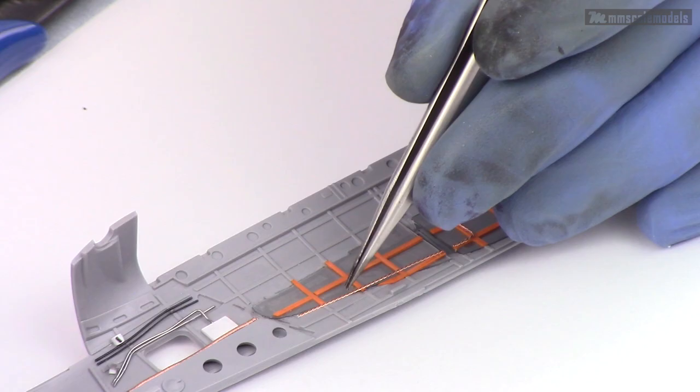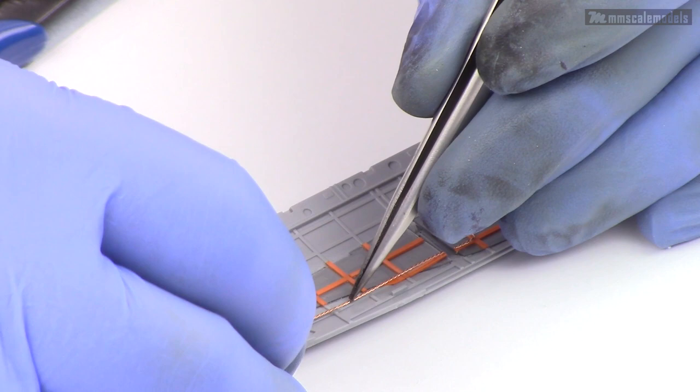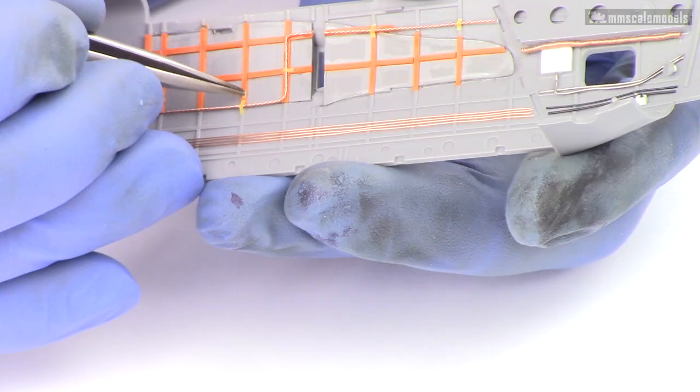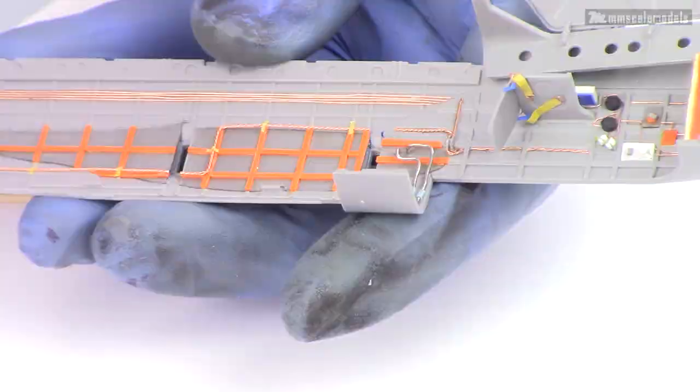After a few masking tape retaining clamps we can call the bomb bay walls pretty much done. I am not going to glue the bomb racks yet as I want to be able to paint everything that is going to be behind them.